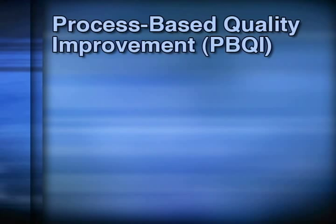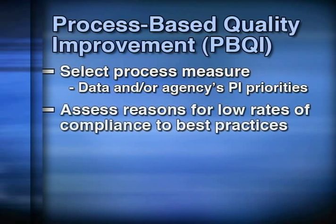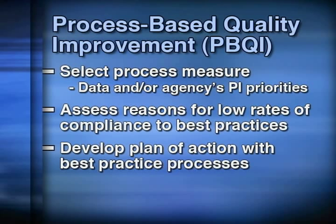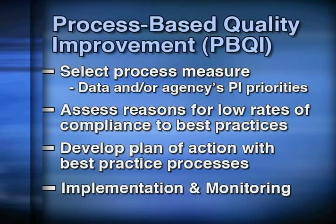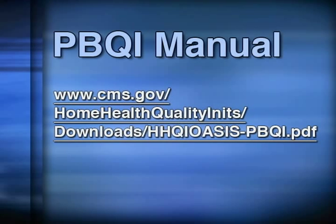PBQI consists of four phases: selecting process quality measures for investigation, investigating the process quality measures, developing a plan of action to improve rates of use of best practices, and implementing and evaluating the plan of action. Detailed information can be found in the PBQI manual available on the CMS website along with the OASIS-C, OBQI, and OBQM manuals. The PBQI manual provides step-by-step instructions on interpreting the process quality measure reports along with guidance on implementing PBQI.